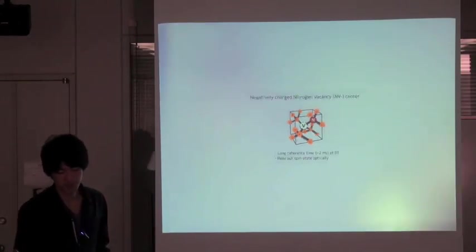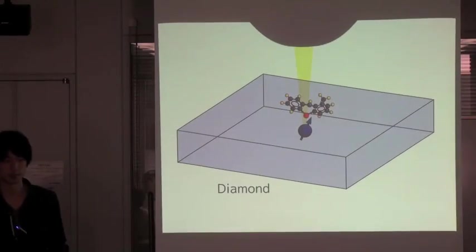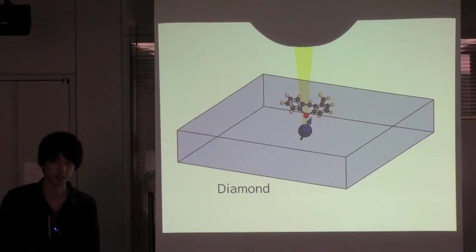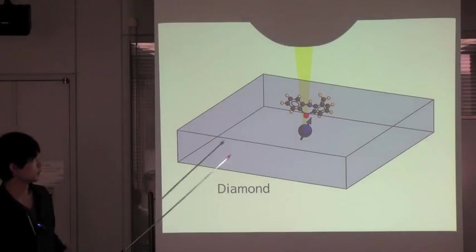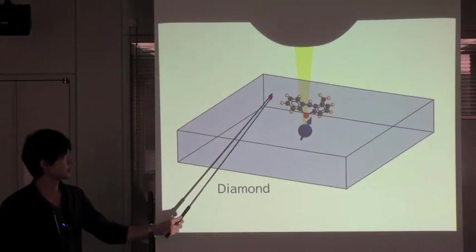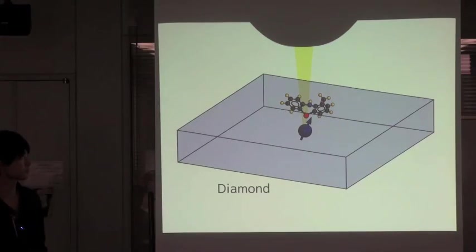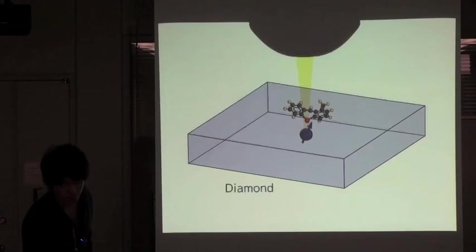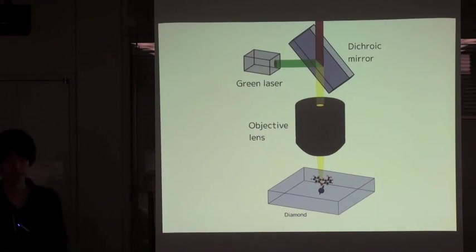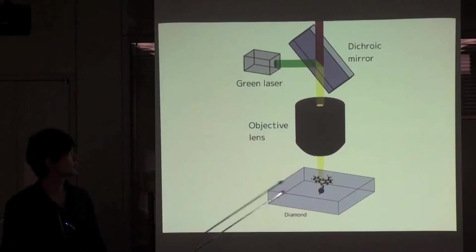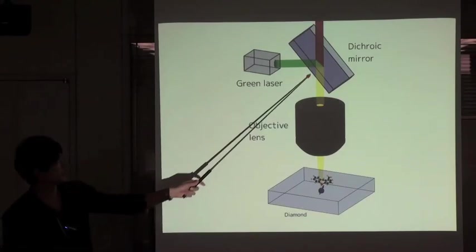I will show you the basic concept of detecting proton spin using NV center. We put molecule on the diamond surface which includes proton spin. Then, we focus green laser on the NV minus center.